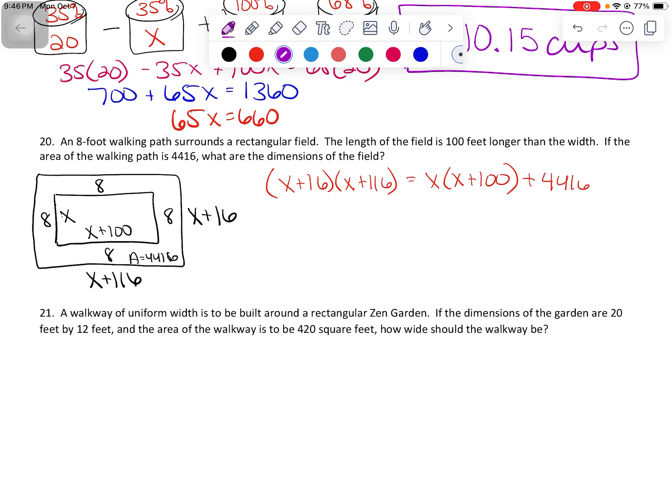So this is going to require just a little bit of multiplication here. So let's go X squared plus 116X plus 16X plus 116 times 16. That is 1856 equals X squared plus 100X plus 4416.